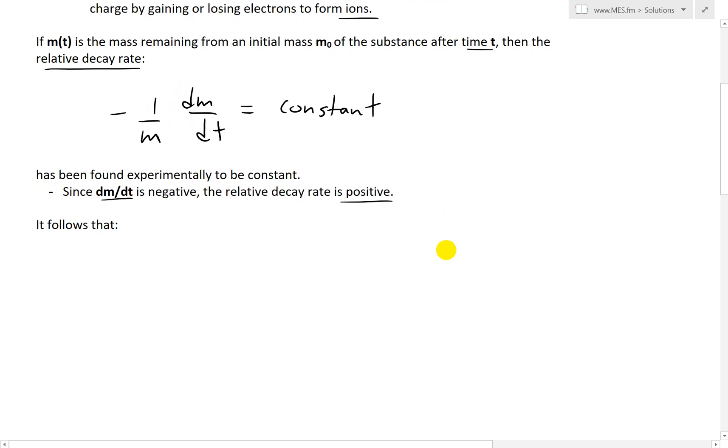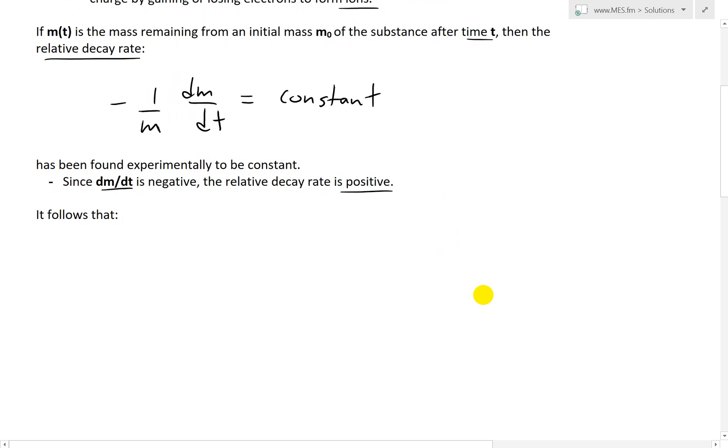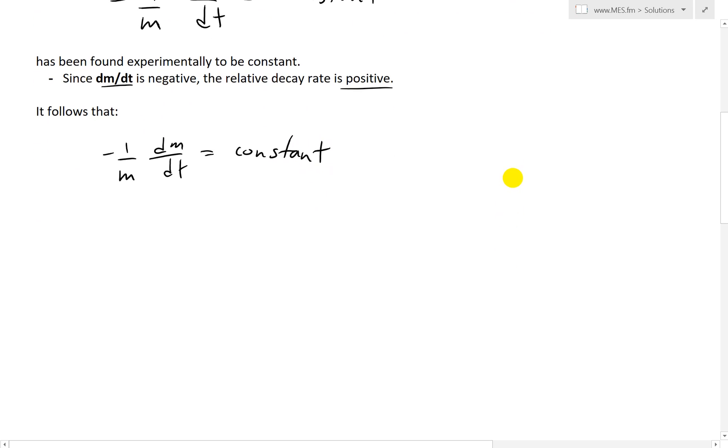It follows that - I'll explain this in more detail. Let's write this down: (1/m)(dm/dt) equals its constant. So rearrange this. What we end up having is, let's write this for dm/dt. This equals - move the negative on this side - a negative constant, let's write constant there. Then move the m on the other side, so times it by m.